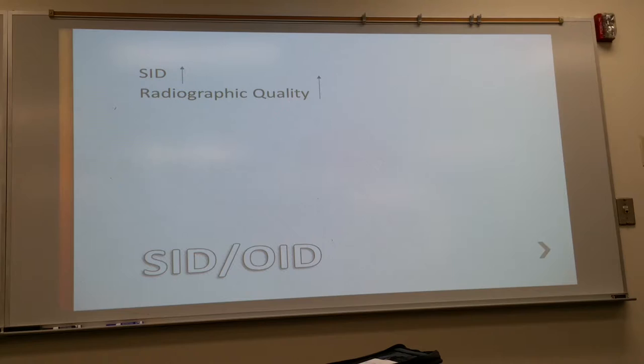But again, this one is always a little trickier one as students, and we haven't studied chest x-ray yet. But we do 72 inches for a chest x-ray. Do you know why? Why we use the long distance for a chest? We get the patient right up next to the wall unit. It's because of the heart. We want the heart as true to size as possible.